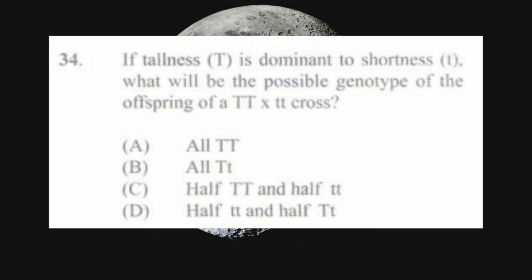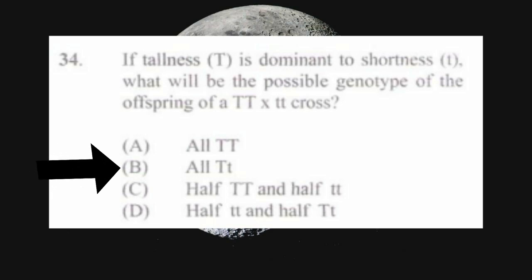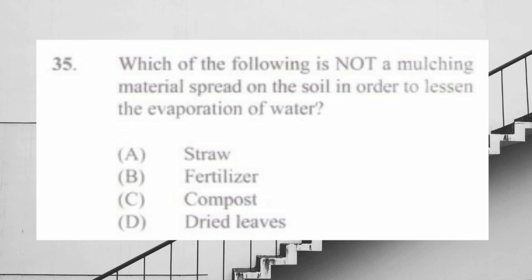Question number thirty-four: if tallness (T) is dominant to shortness (t), what will be the possible genotype of the offspring of a homozygous dominant times a homozygous recessive cross? a) all dominant, b) all heterozygous, c) half dominant and half recessive, d) half recessive and half heterozygous. The answer is b) all heterozygous.